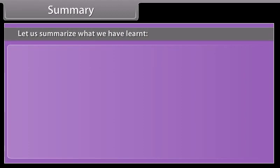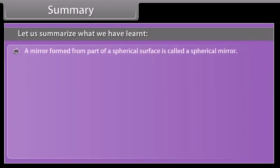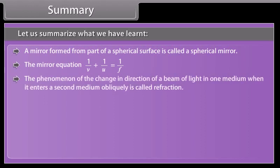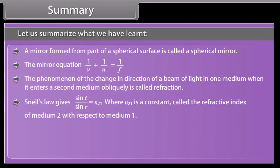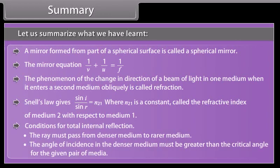Summary: A mirror formed from part of a spherical surface is called a spherical mirror. The mirror equation is 1/v + 1/u = 1/f. The change in direction of a beam of light when it enters a second medium obliquely is called refraction. Snell's law gives sin i / sin r = N₂₁. Conditions for total internal reflection: the ray must pass from denser to rarer medium, and the angle of incidence must be greater than the critical angle for the given pair of media.